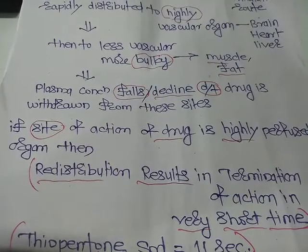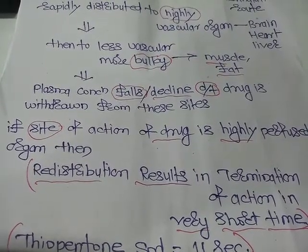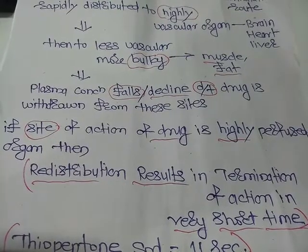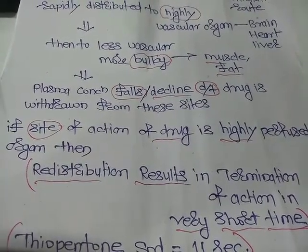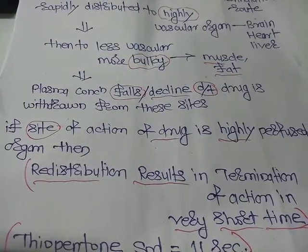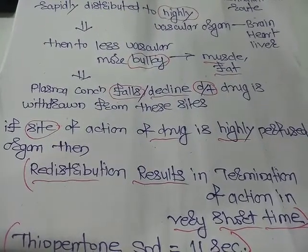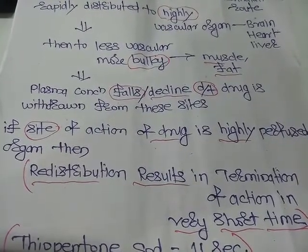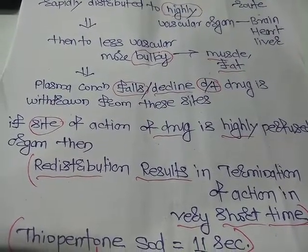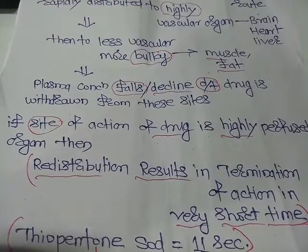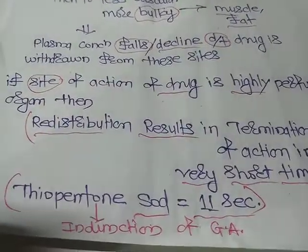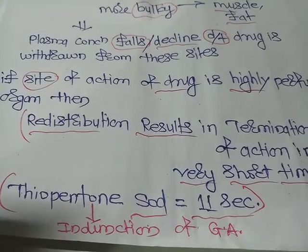The drug is rapidly distributed to the highly vascular organs — brain, heart, liver, kidney — and then redistributed to the less vascular, more bulky organs, that is muscle and fat. Because of that, the plasma concentration falls and there is a termination of action of thiopentone sodium. That is why the duration of action of thiopentone sodium is only 11 seconds.